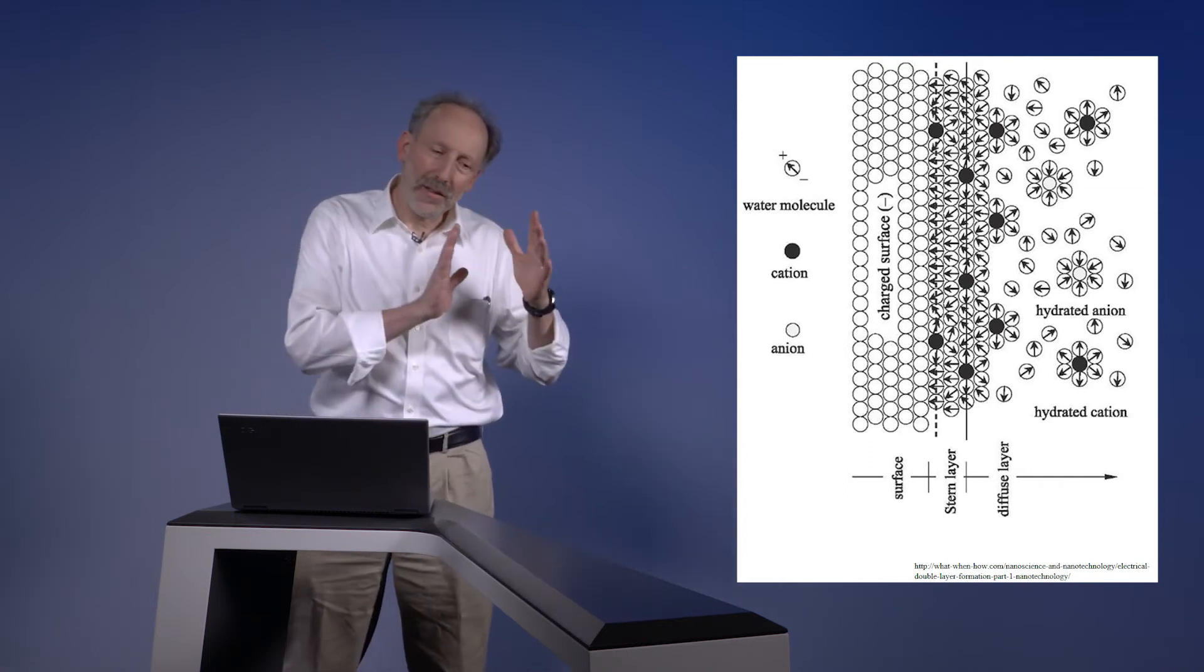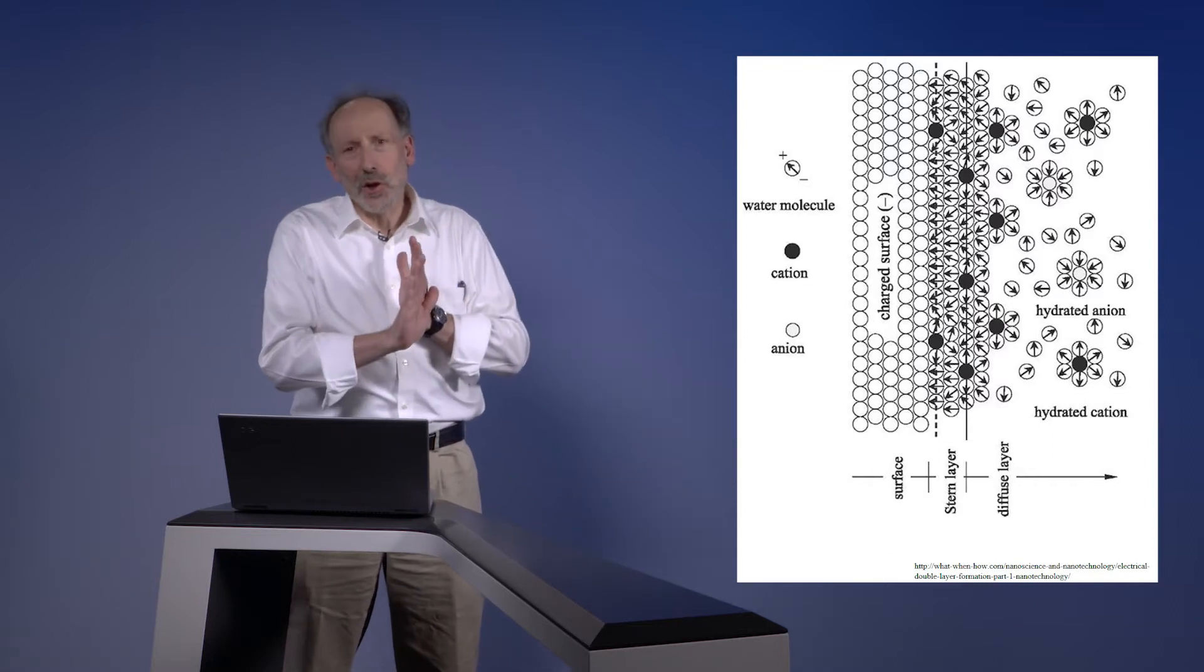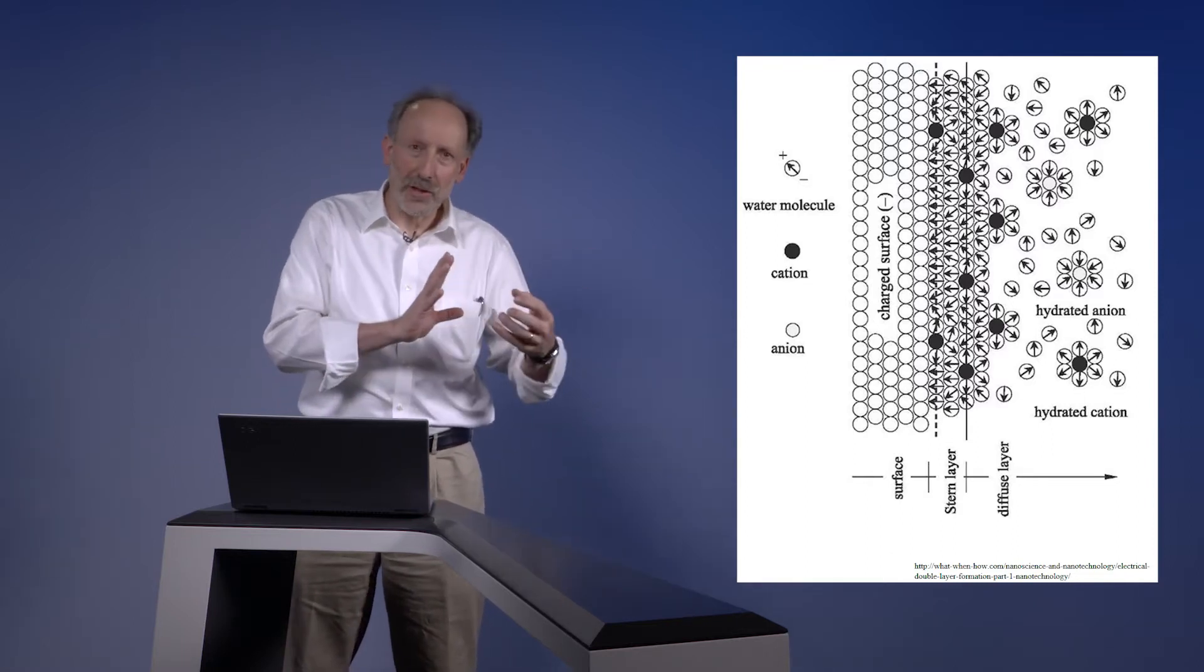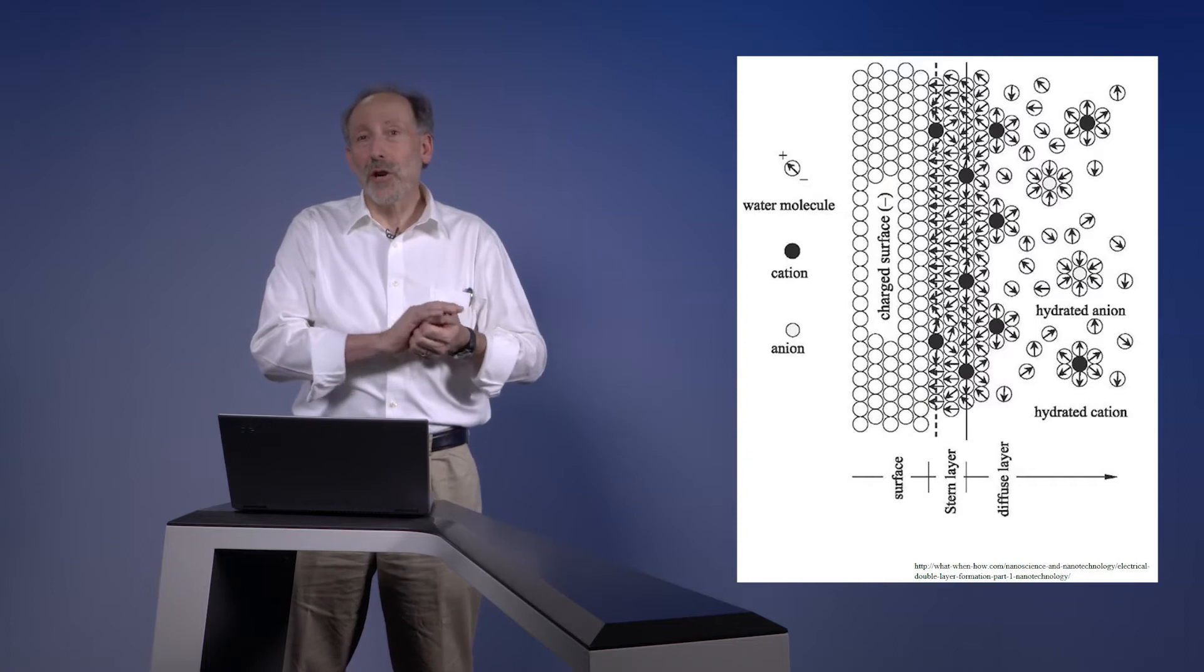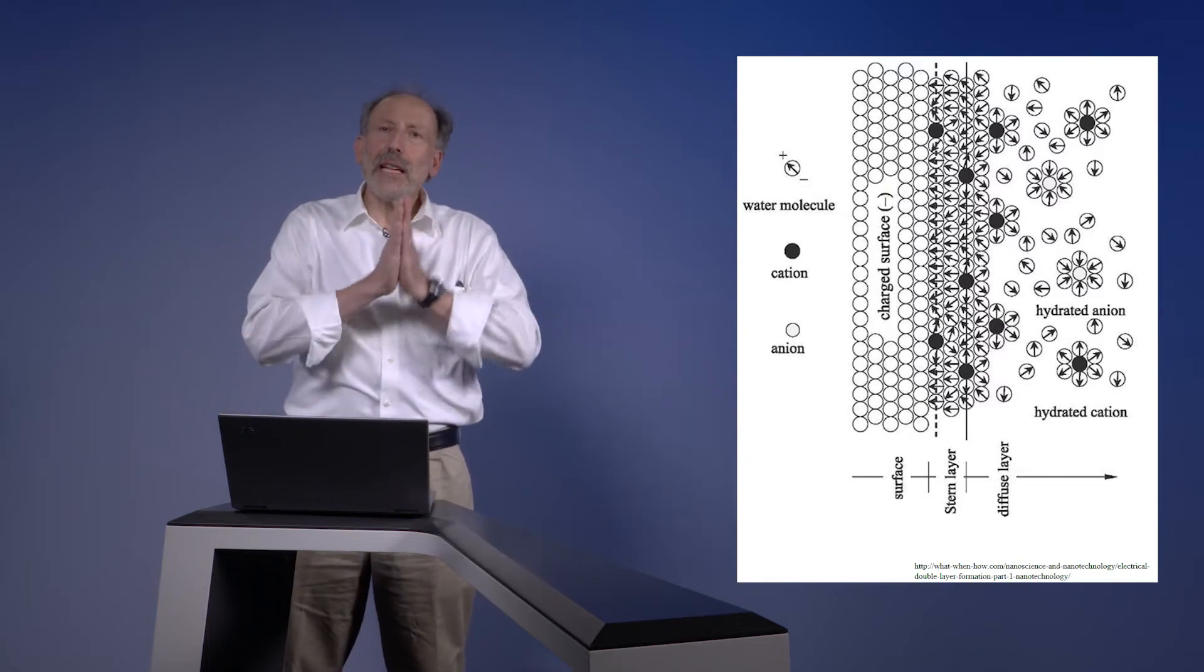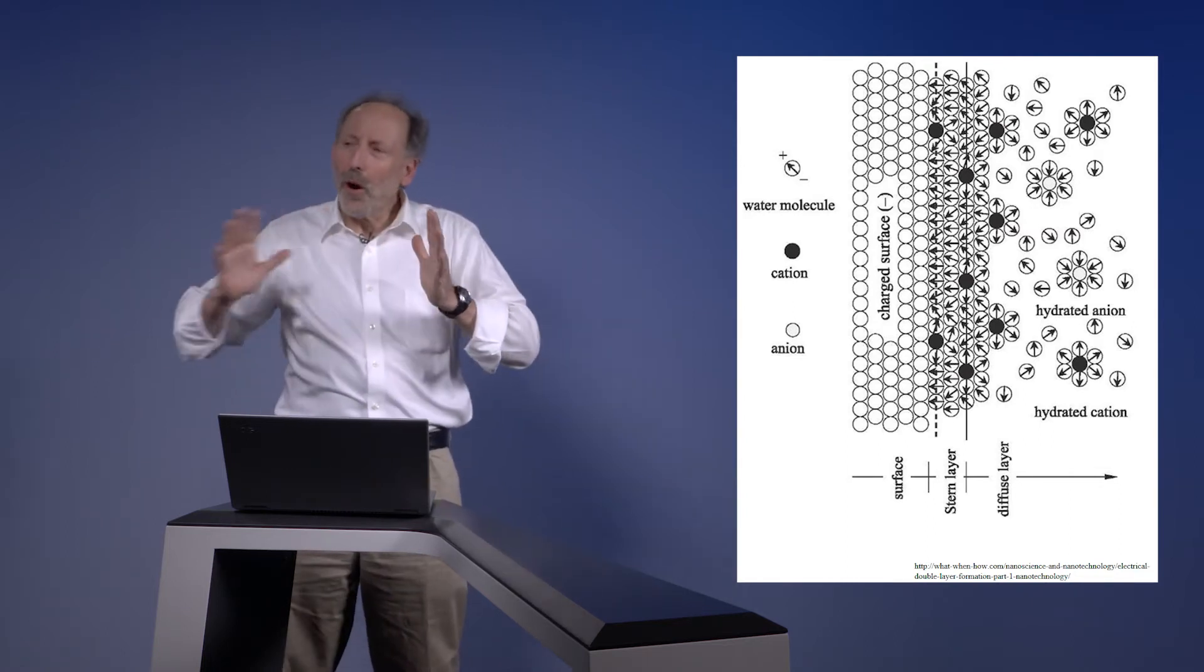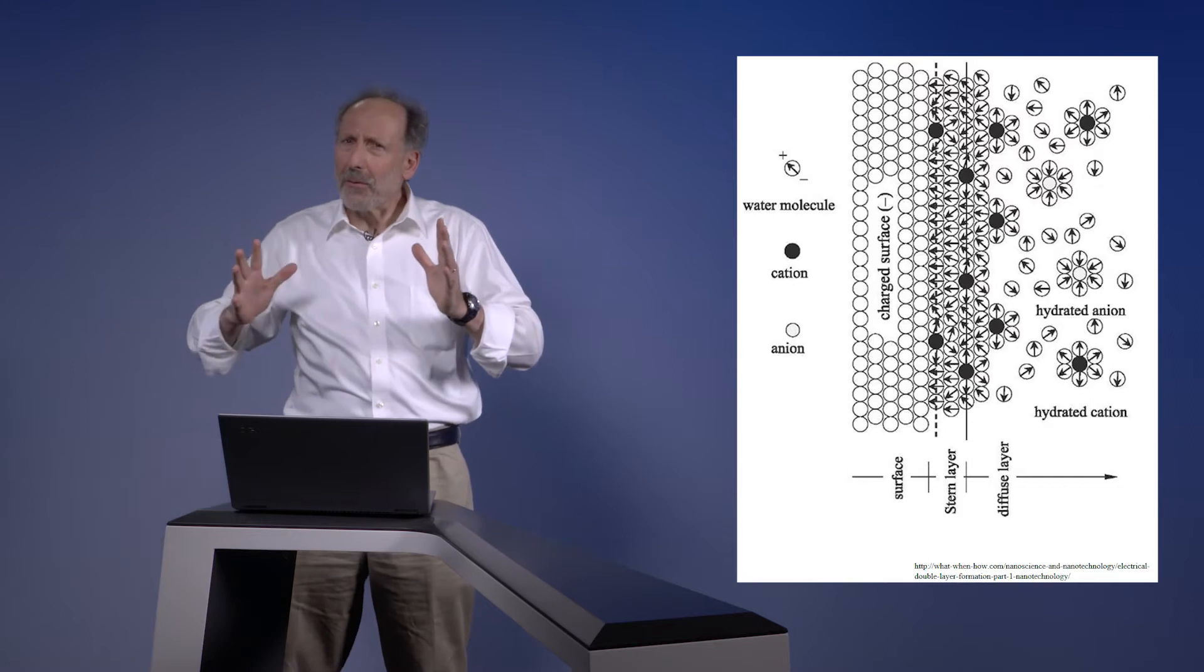We've seen that clay surfaces and mineral surfaces in general have this negative charge which arises from isomorphic substitutions of lower charge atoms in place of silicon. So we have this negatively charged surface. What's going to happen there? And how is the water phase specifically going to interact with that surface?